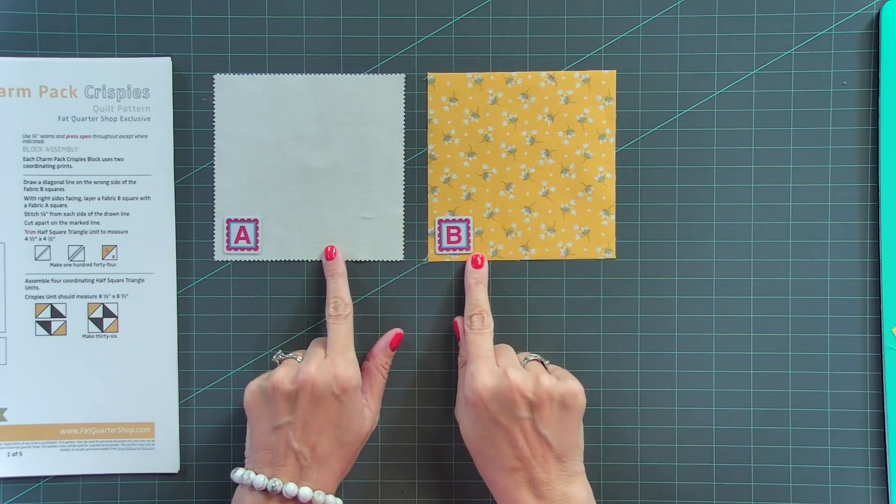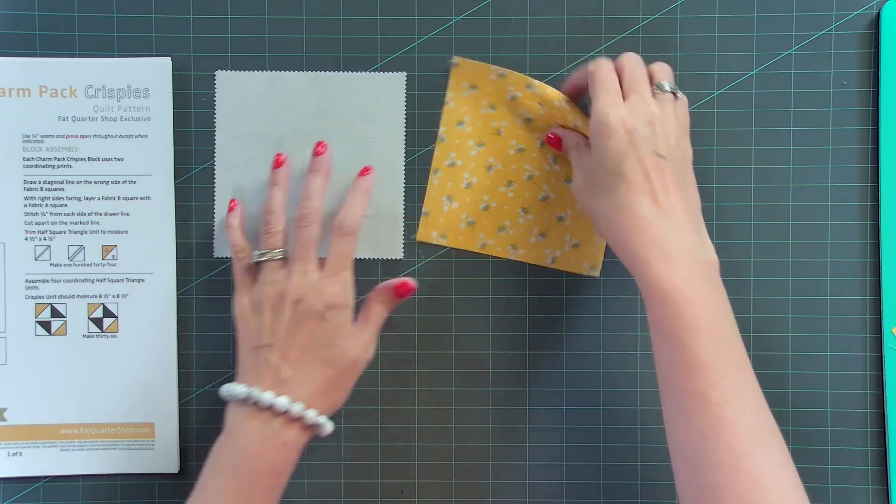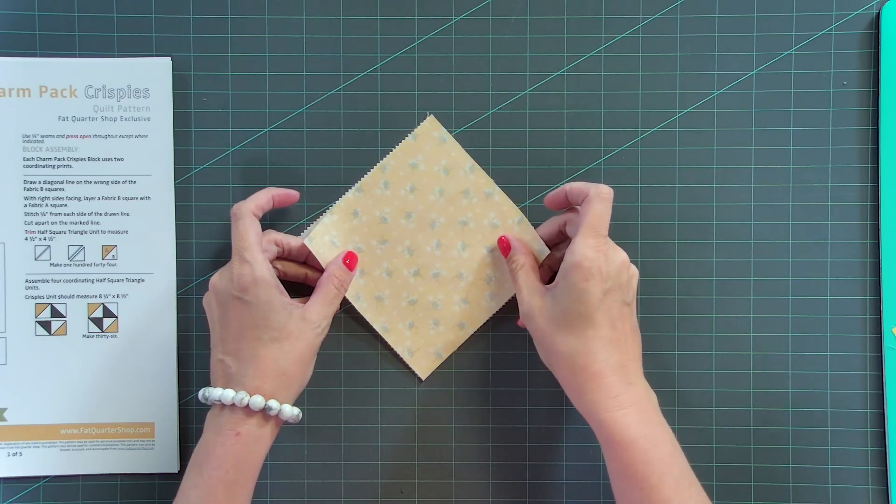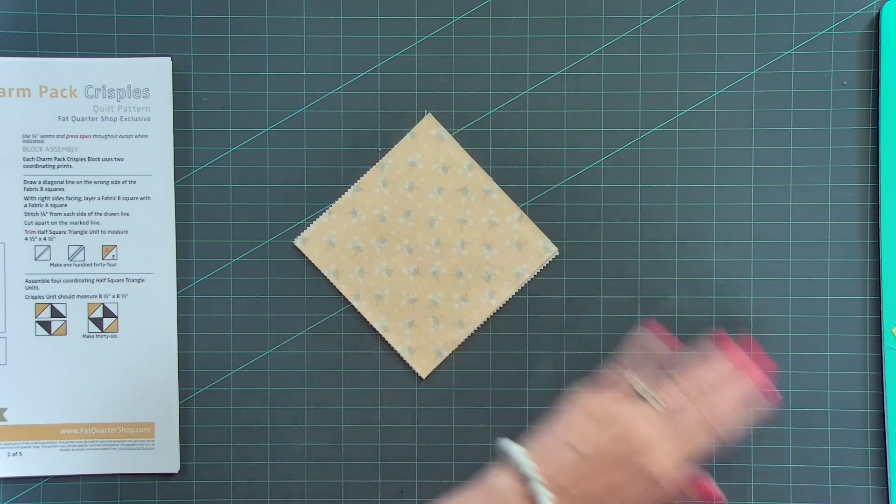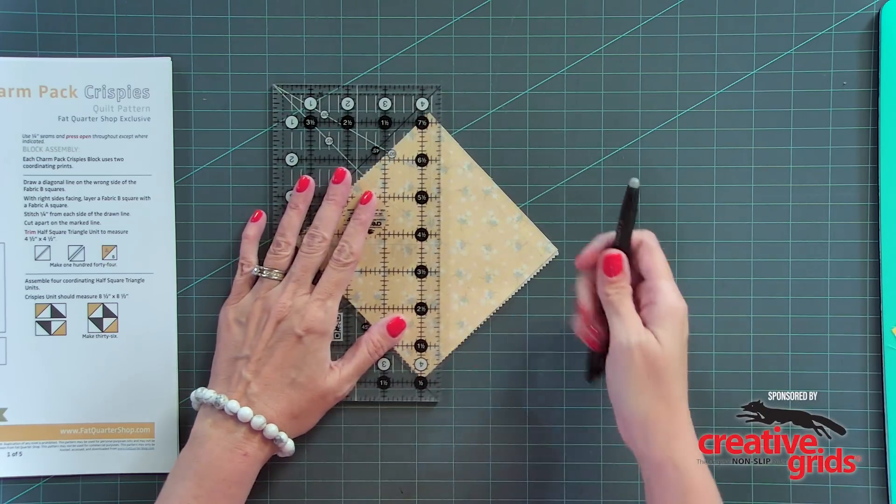So what you're gonna do is start with one solid and one print Charm Pack, super easy. Now on this pattern, you cannot starch because if you starch, there won't be enough room to trim down.